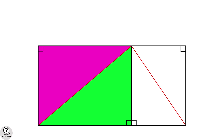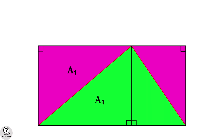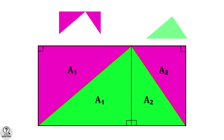Consider the first set of right triangles — both have the same area, say a1. Similarly, the second set of right triangles both have the same area, say a2. The total area of the pink region is a1 plus a2, and the total area of the green region is also a1 plus a2. So both pink and green regions have equal area.